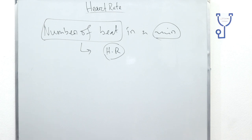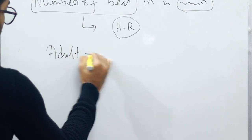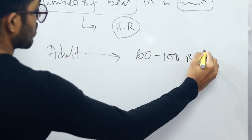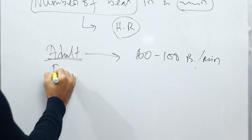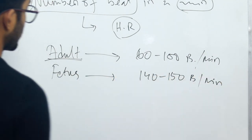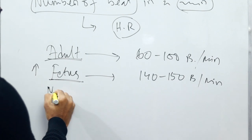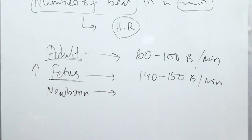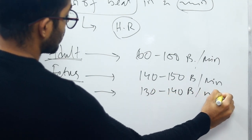Heart rate differs with age and sex. In case of an adult person, heart rate is 60 to 100 beats per minute. In case of a fetus, it is 140 to 150 beats per minute — it is increased in the fetus. In case of a newborn, heart rate is 130 to 140 beats per minute.